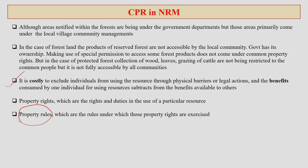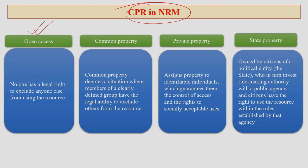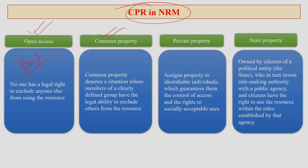Let me discuss different types of property in the paradigm of common property right in NRM. Open access: like the example of the pond, no one has a legal right to exclude anyone else from using a resource in an area — that we call open access. No one can stop me or my fellow neighbour from utilizing that common pond and its water. But remember, if that pond is located within a protected forest, then we cannot have access just like that.